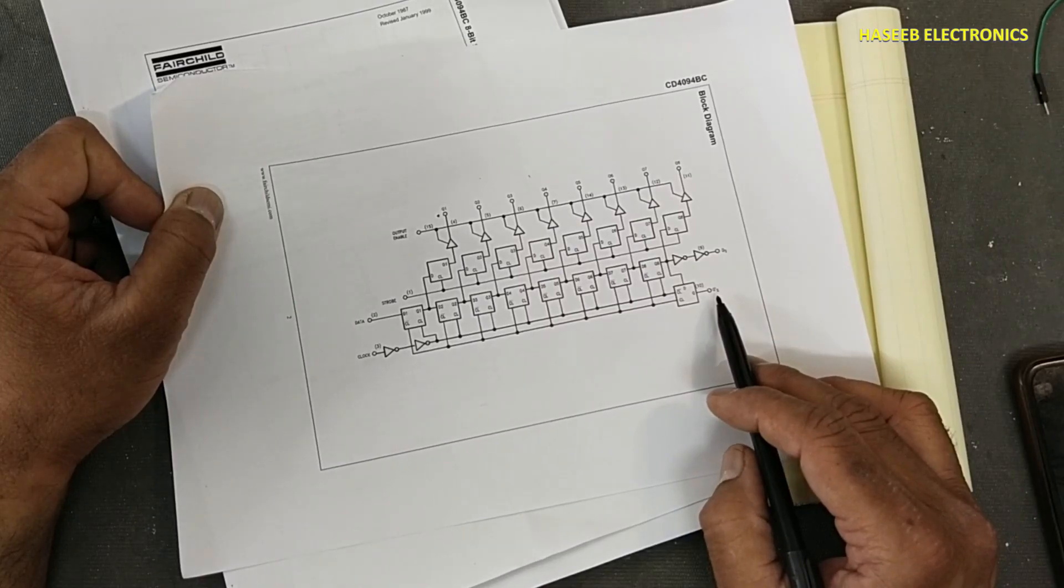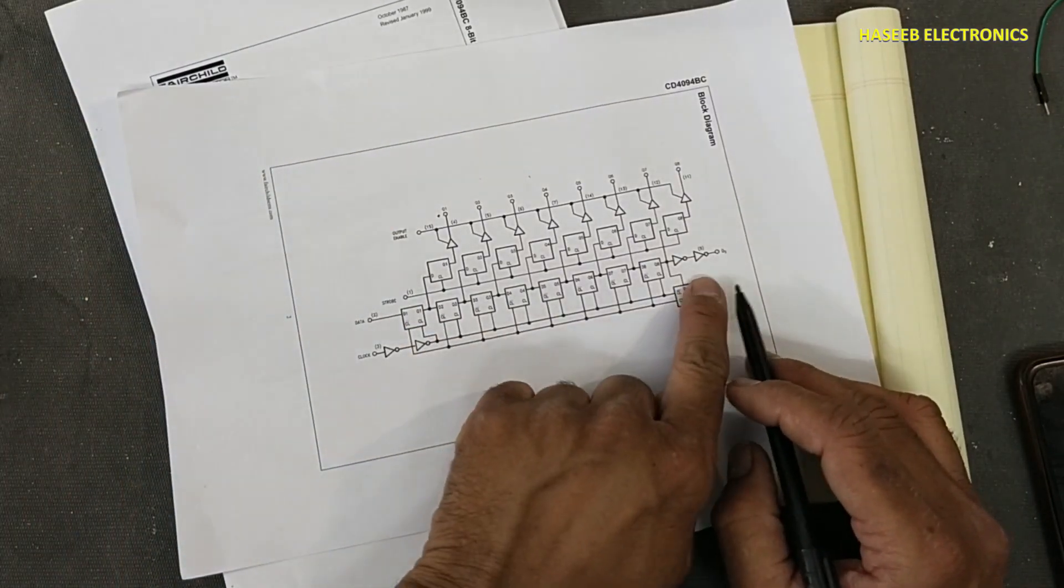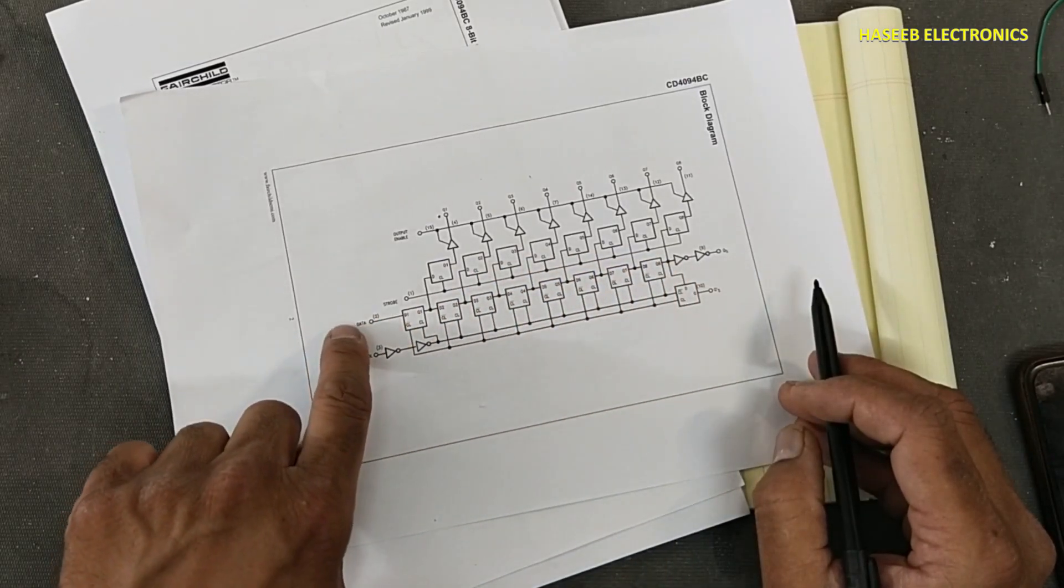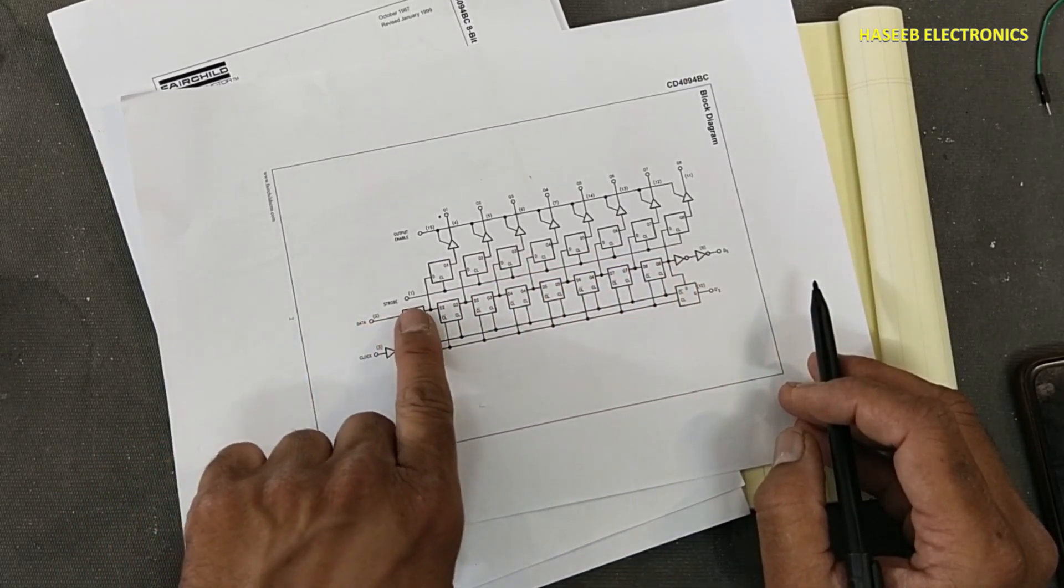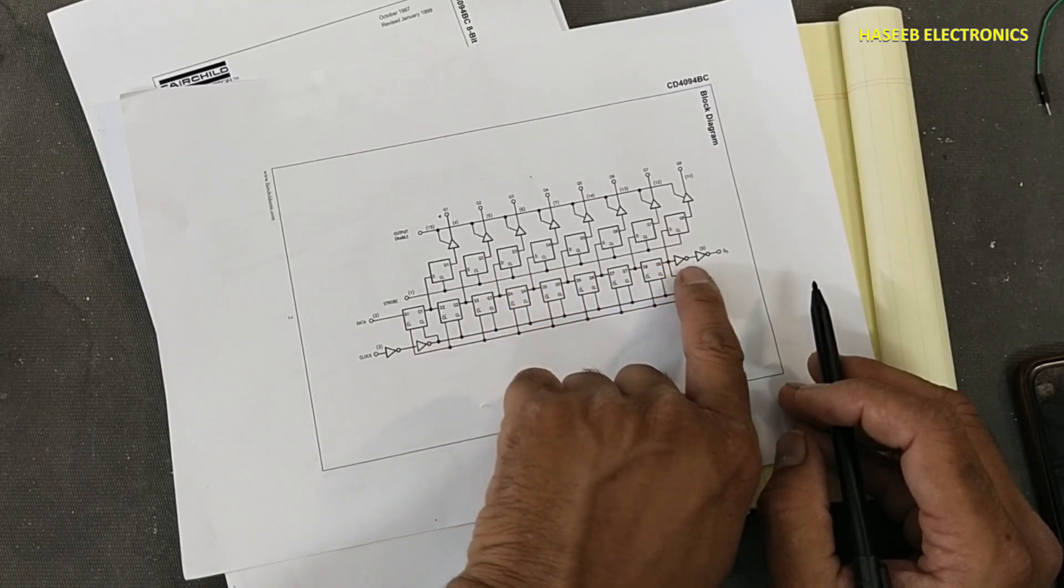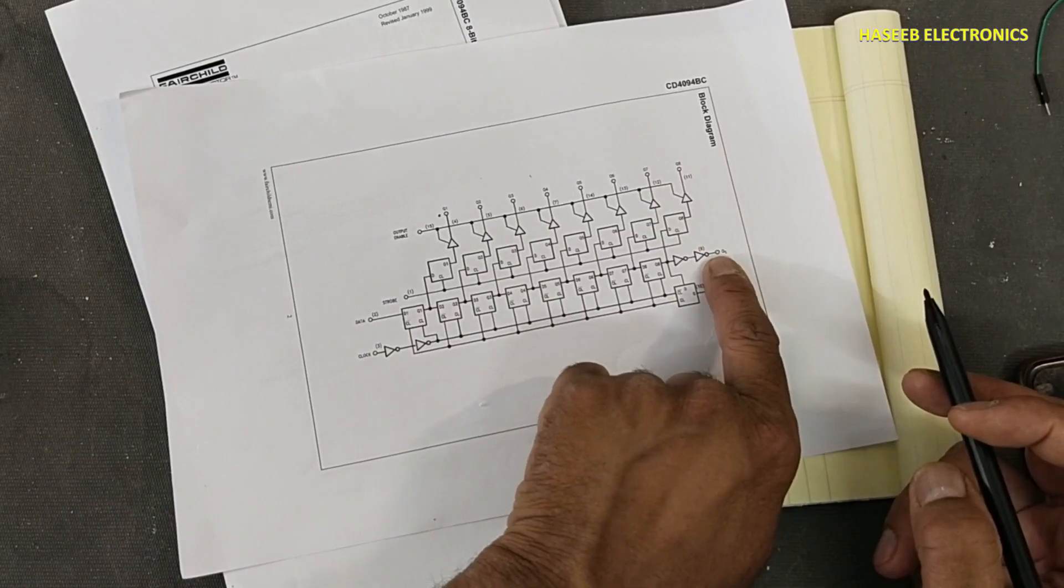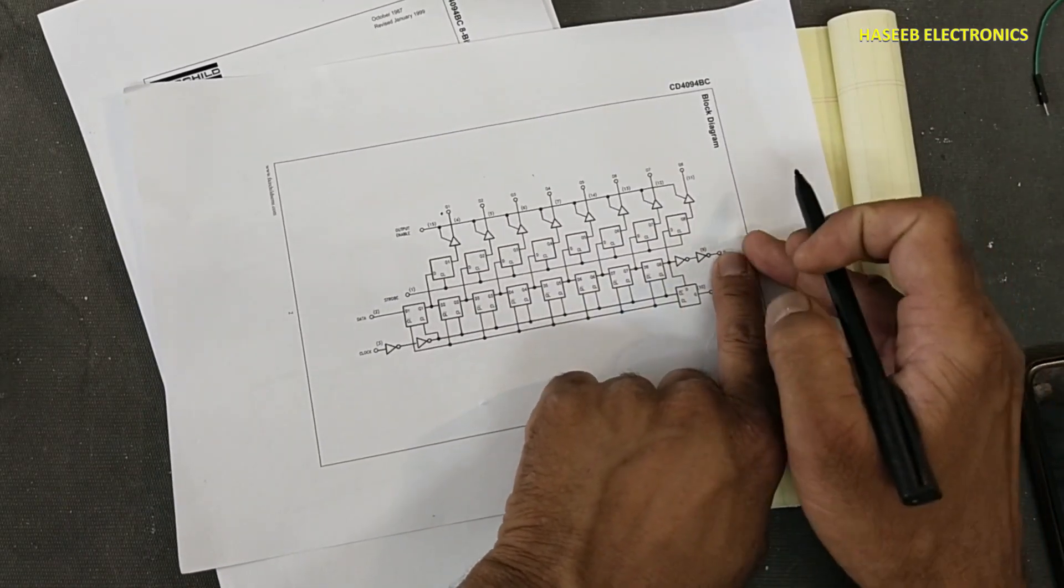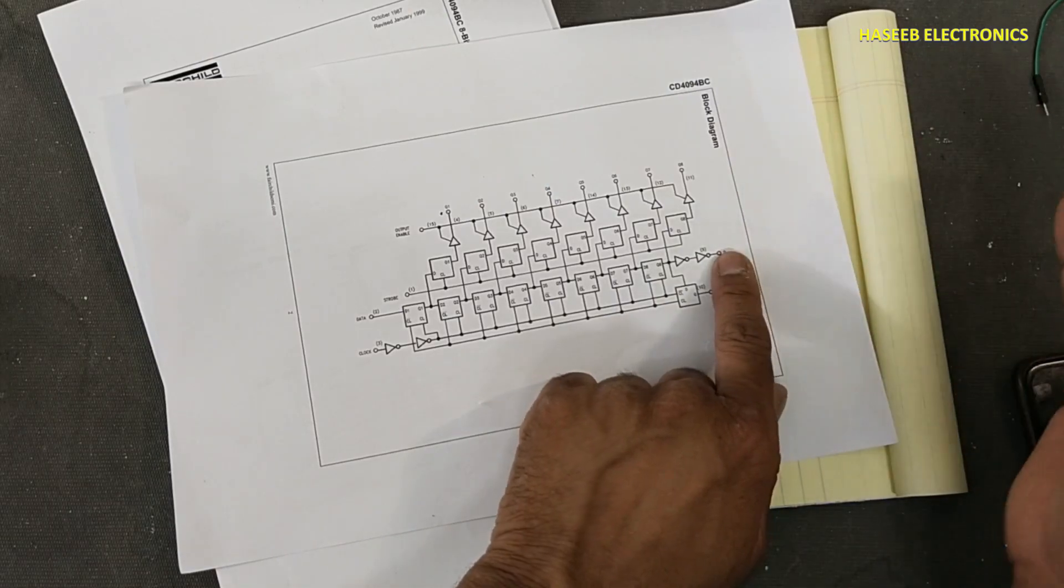At the final output there is QS and QS bar. These are output pins. The first data input will keep moving step by step. When it will reach here it will be available at output port so that this data we can inject to the next stage.